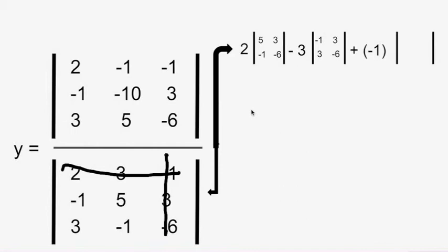So the remaining numbers inside the matrix are -1, 5, 3, and -1. And you will go about solving this just as you do second order determinants, where we cross multiply inside the matrices. So you have 2 times -30 minus -3, and that's solved by simplifying the second order determination through cross multiplication.